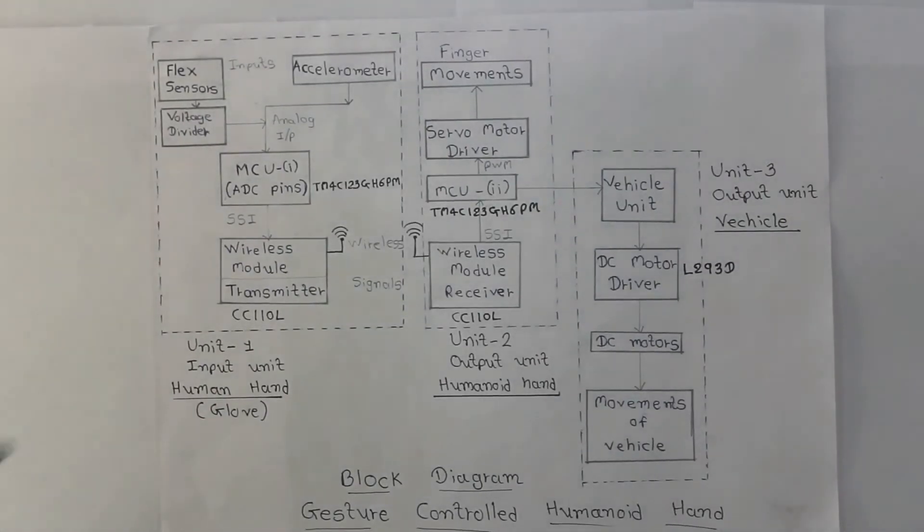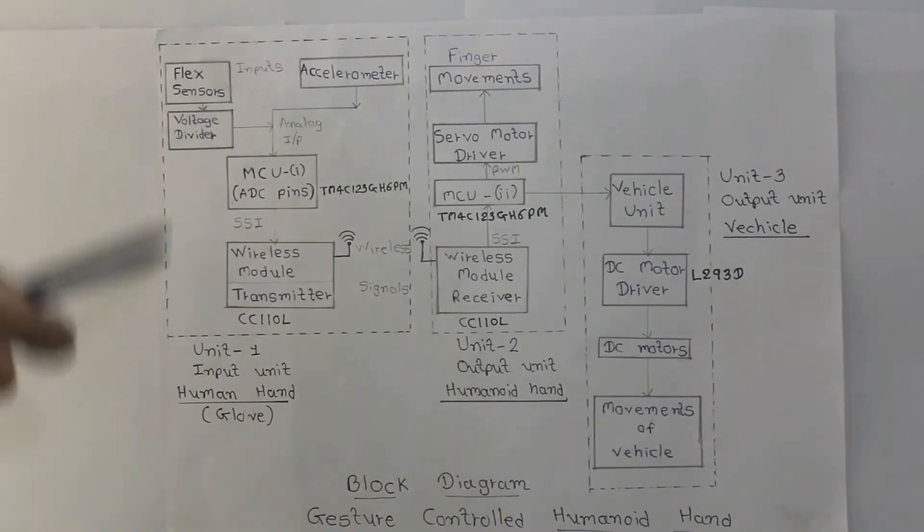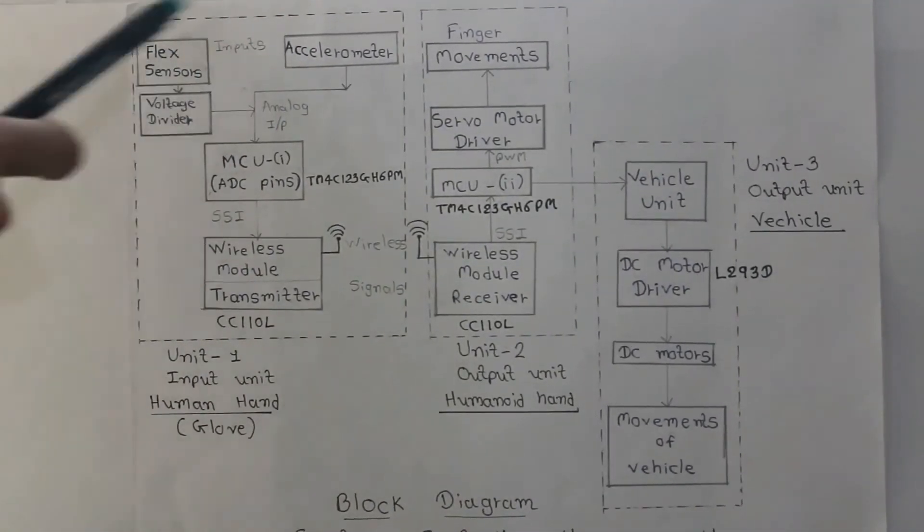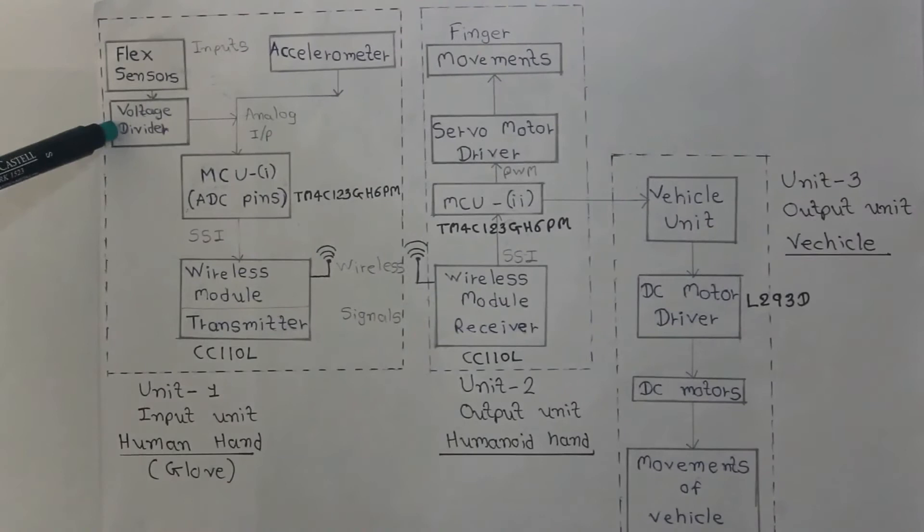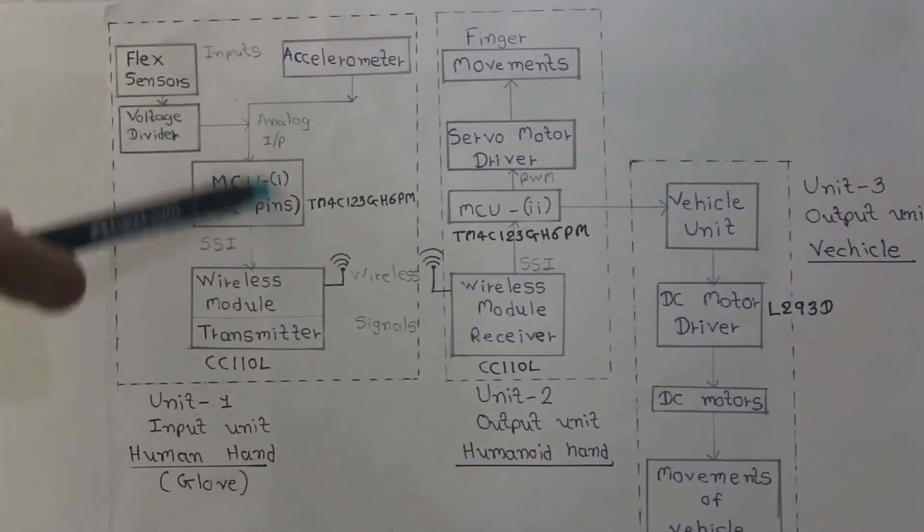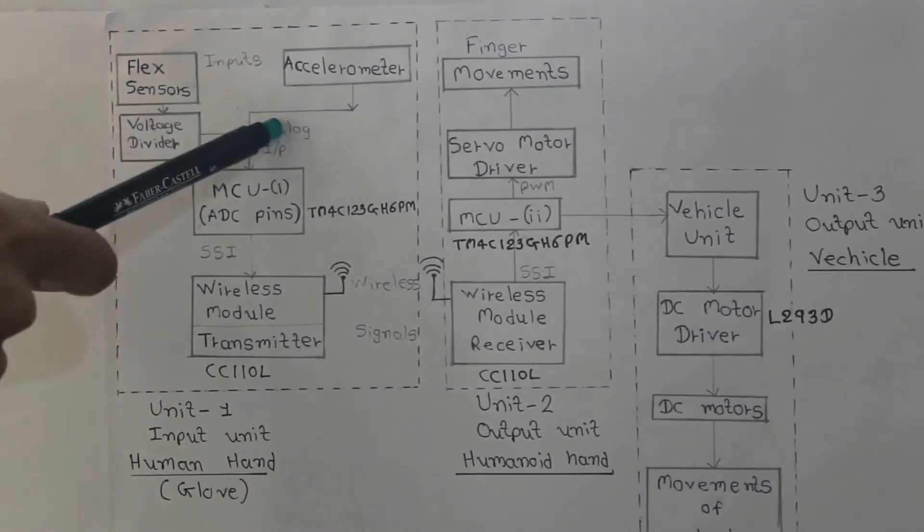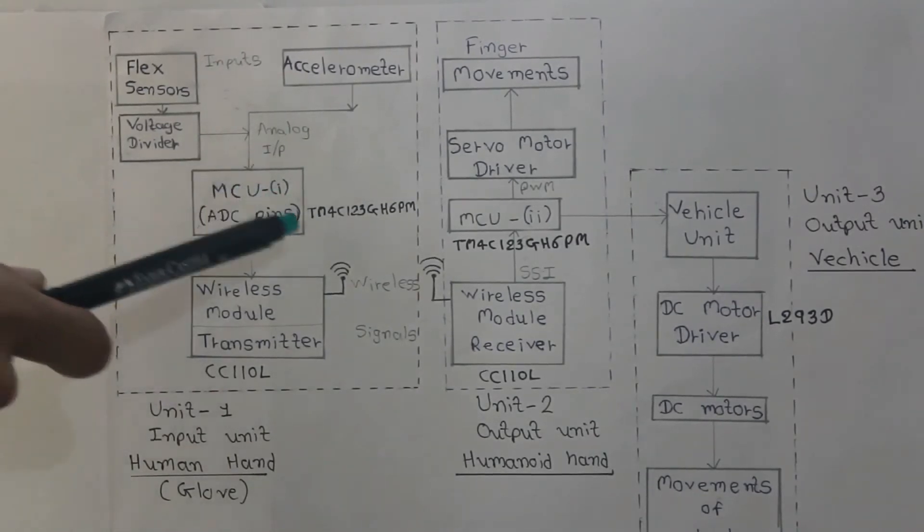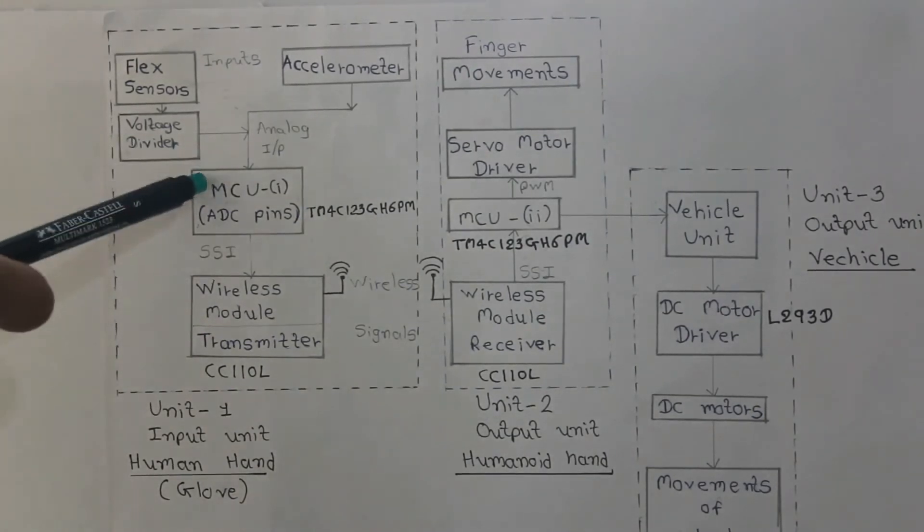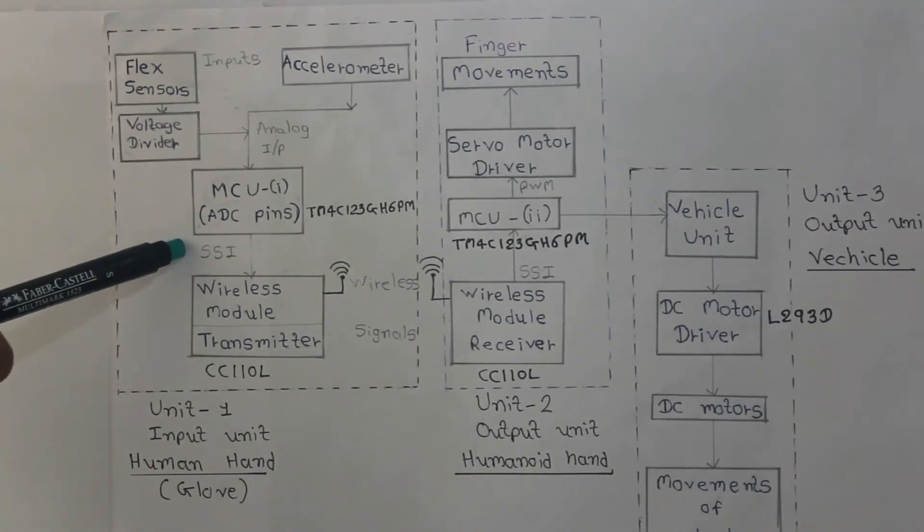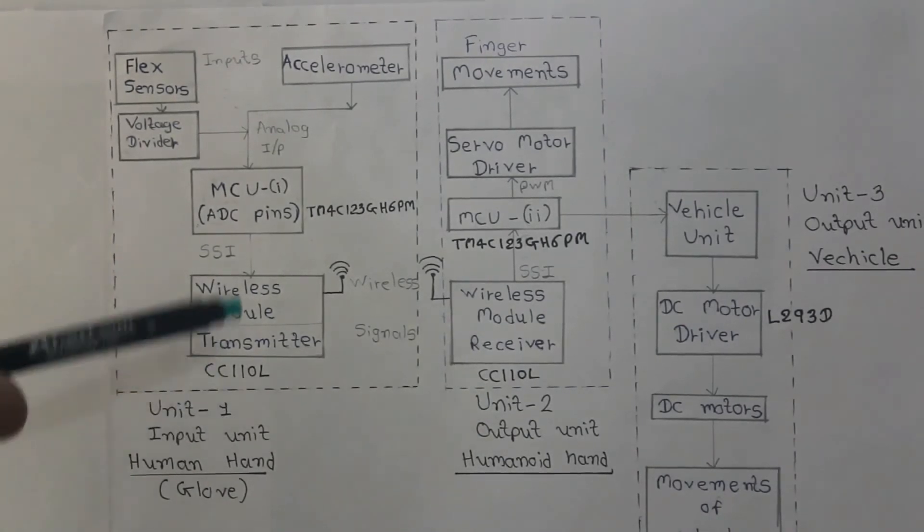So here is the detailed block diagram of our system. There are three units. Unit 1 is human hand, Unit 2 is humanoid hand, Unit 3 is vehicle unit. Let us discuss about unit number 1. There are three inputs: flex sensor and accelerometer. Flex sensor will convert the bending of fingers into respective resistance. This resistance is converted by voltage divider into respective voltage. This analog voltage is given to microcontroller. Accelerometer will convert the motion according to the XYZ axis into analog voltages. This analog voltage is also given to microcontroller. We are using TM4C123GH6PM microcontroller from Texas Instruments for our project. Microcontroller will communicate with transmitter using SSI protocol. SSI stands for Synchronous Serial Interface. We are using CC110L transceiver from Texas Instruments as a wireless module.